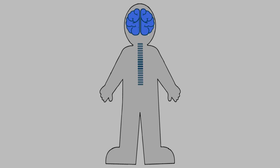When we experience pain, the signal goes from the source to our spinal cord and then to our brain. But when we rub the painful spot, other than pain signals we now also have touch signals and pressure signals, and they are all traveling together towards our spinal cord.